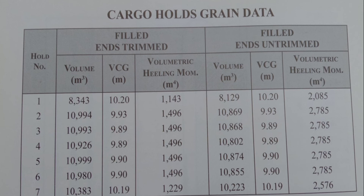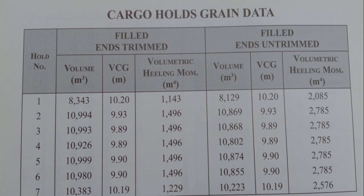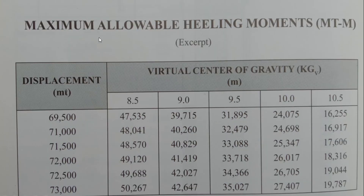As long as the hatch cover from the top of the coaming is already full, that is when we stop and consider it 100% filled. The volumetric heeling moment for filled and untrimmed is slightly higher compared to filled and trimmed, as you can see. So for cargo hold number four, partly filled, you have M4 of 12,500. Then you add all the volumetric heeling moments from the other holds together, and the total is compared to your maximum allowable. This table shows the maximum allowable heeling moments against displacement as far as your vessel is concerned.